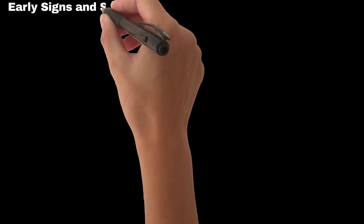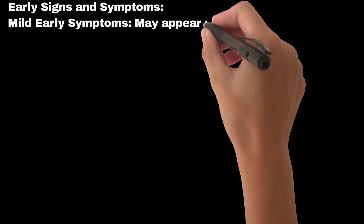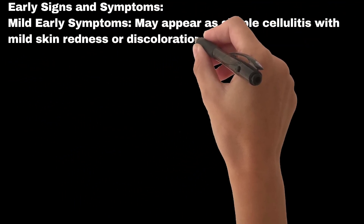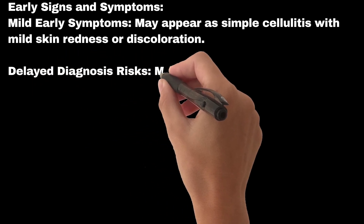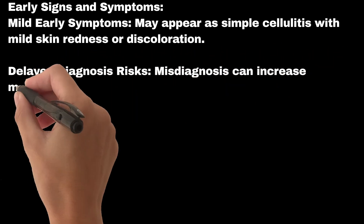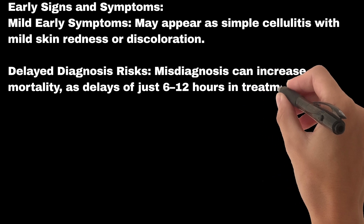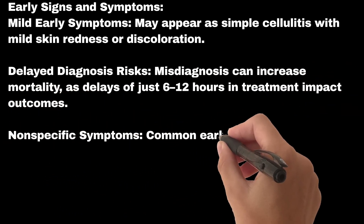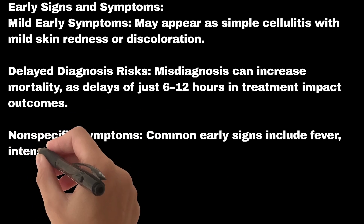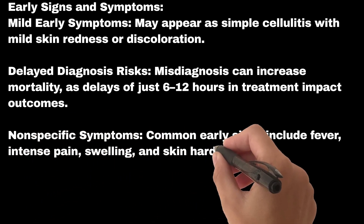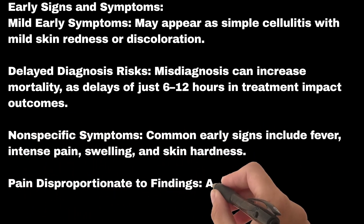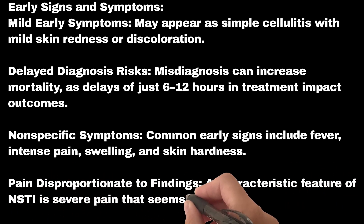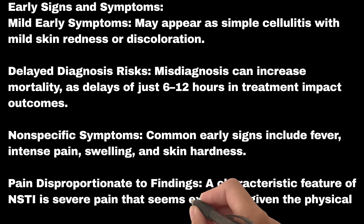Early signs and symptoms: Mild early symptoms may appear as simple cellulitis with mild skin redness or discoloration. Misdiagnosis can increase mortality, as delays of just 6–12 hours in treatment impact outcomes. Common early signs include fever, intense pain, swelling, and skin hardness. A characteristic feature of NSTI is severe pain that seems excessive given the physical findings.